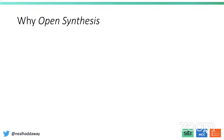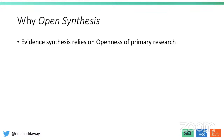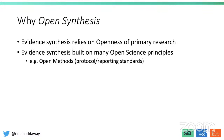Open synthesis is important for a number of reasons. Evidence synthesis itself relies on the openness of primary research that we are synthesizing, so we must deal with hurdles around that openness and therefore be more open ourselves. Additionally, evidence synthesis is already built on many open science principles — for example, we use open methods such as publishing an a priori protocol and reporting standards like PRISMA and ROSES. However, the linkages between open science and evidence synthesis haven't been explicit, so the potential benefits haven't been fully appreciated.